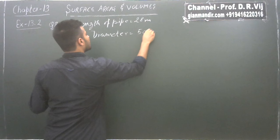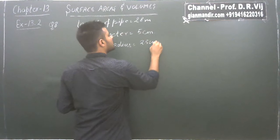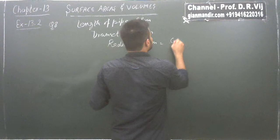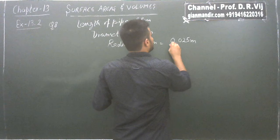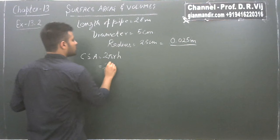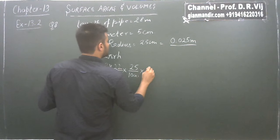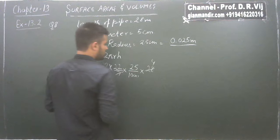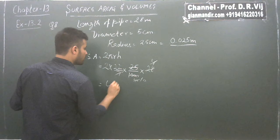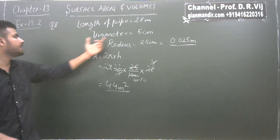Diameter is given as 5 centimeter, so radius will be 2.5 centimeter. The length is given in meters, so let's convert: 2.5 cm = 0.025 meter. Curved surface area is 2πRH = 2 × (22/7) × (25/1000) × 28. Solving step by step, we get 4.4 meter square. That is the total radiating surface in the system.